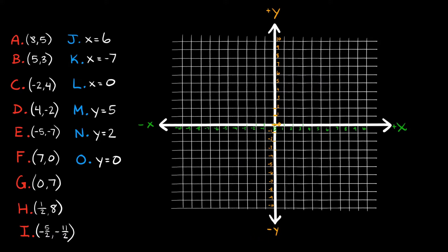One thing I want to mention about these coordinates: the way you write coordinates is in this form — always between parentheses, and in the order x, y. The first number listed always tells you how many spaces you move along the x-direction, and the second number always tells you how many spaces you move along the y-direction. A quick way to remember which is x and which is y: you always list them in alphabetical order. Since we read left to right, x comes before y alphabetically, so coordinates are always listed as x, y.